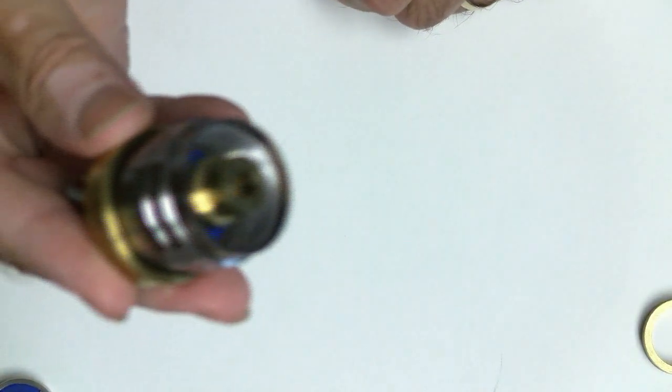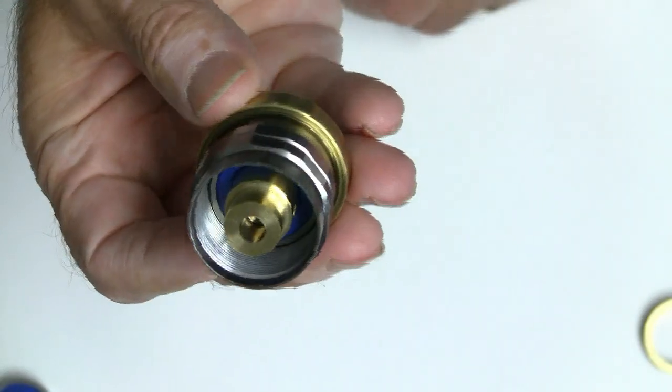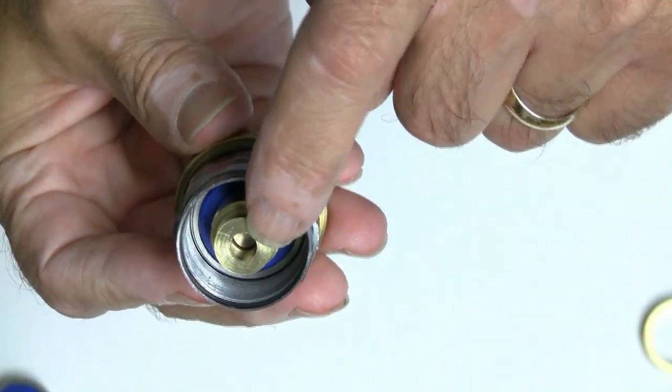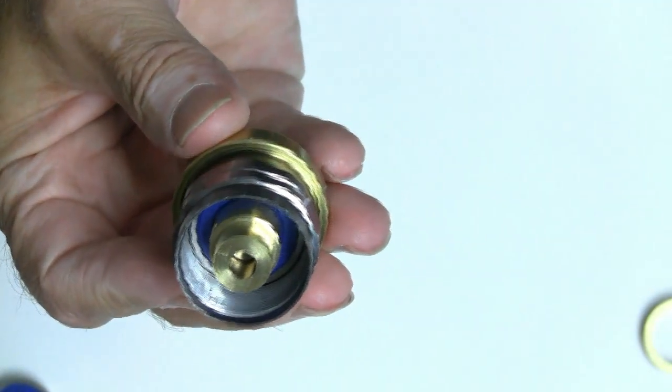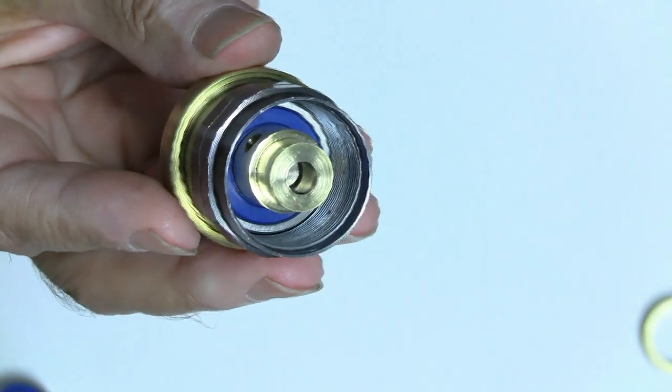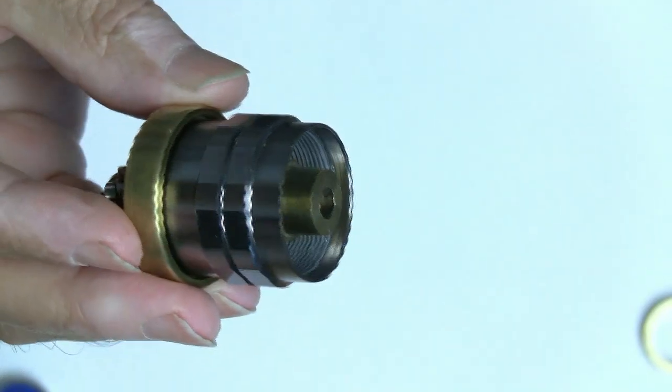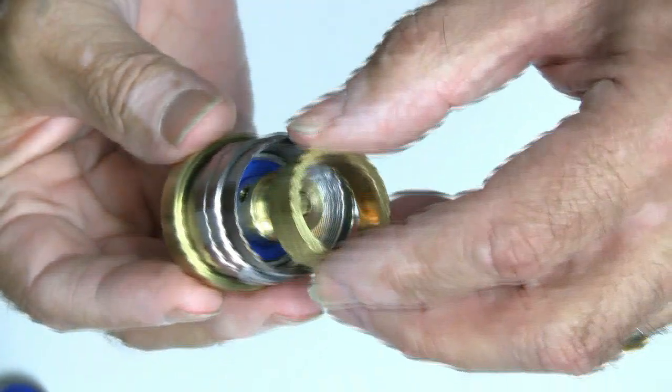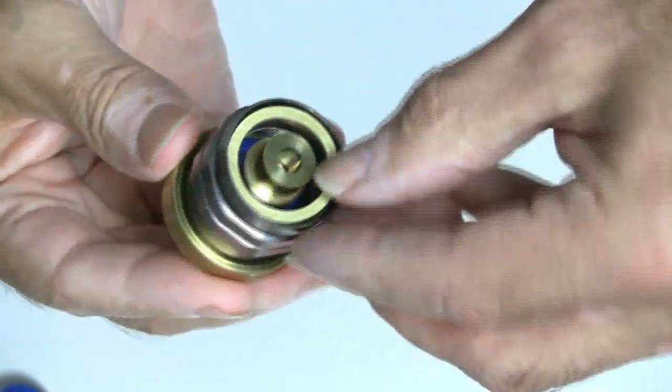Then I made a collar out of brass right there and drilled a hole in that and put a set screw in it. So the set screw holds everything in place nice and tight.